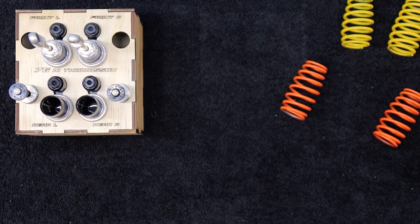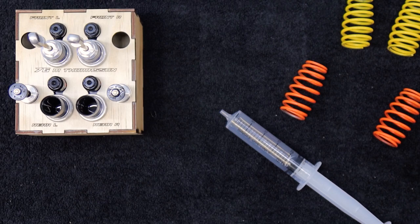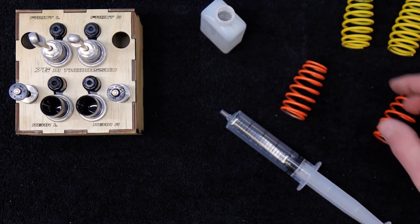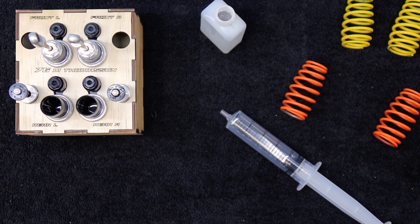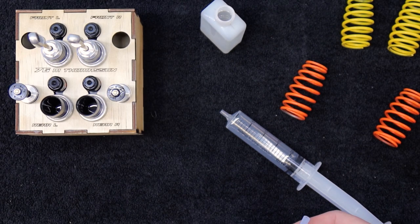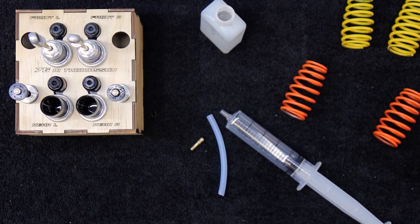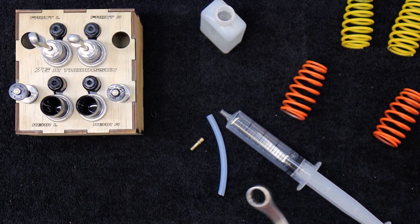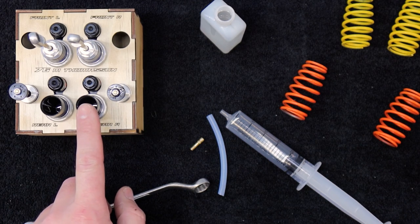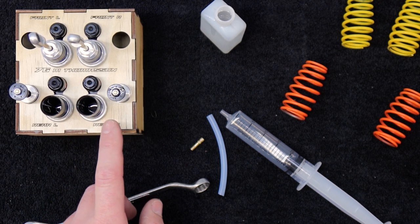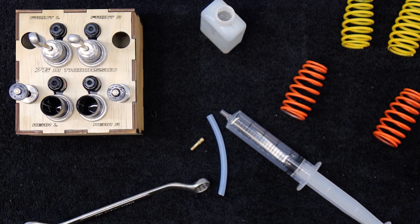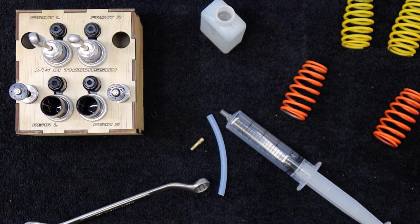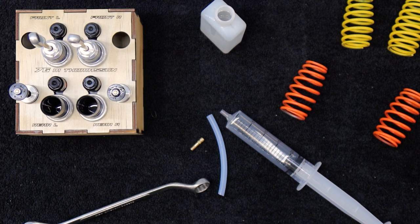Now for the fun part. The part everybody hates, trust me. And a lot of the frustration comes from the silicon shock fluid and bleeding the air out of that. So there's a lot of things on the market for that. There's shock vacuum devices where you fill your shock full of silicon fluid and then you put it within a vacuum chamber and it removes the air by a vacuum. I'm going to show you that same method, but with something you already have in your toolbox at home.